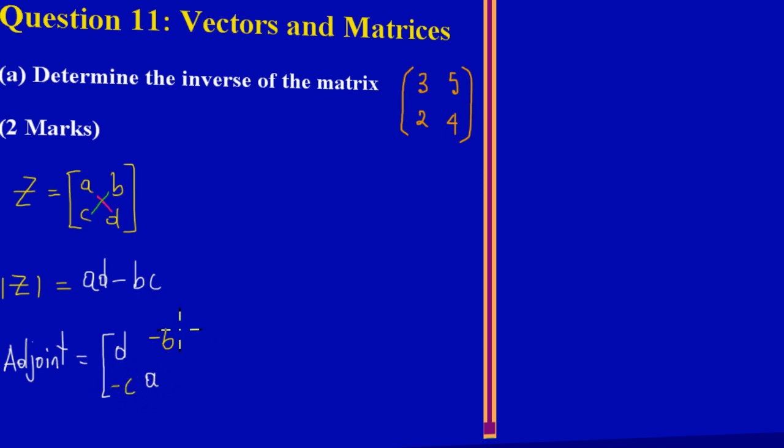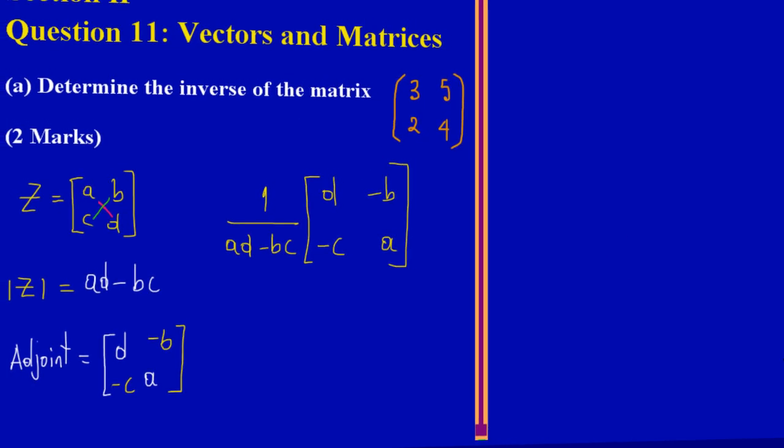So that would be my adjoint. The inverse of the matrix Z would be 1 upon my determinant, which is AD minus BC, and that would be multiplying my adjoint, which is [d -b; -c a]. So I'm taking my determinant and multiplying it by my adjoint, and that's how you find the inverse of a matrix. Let's now see how it applies to the question.